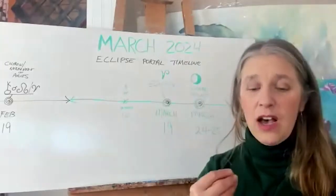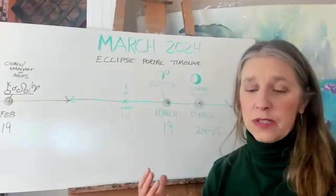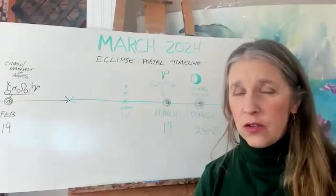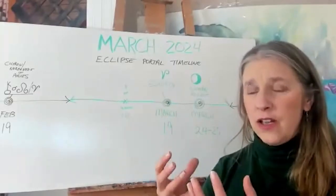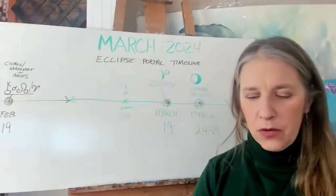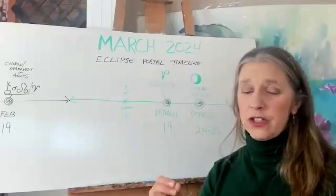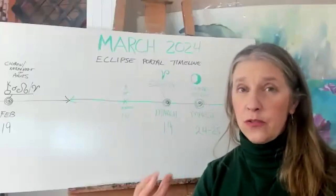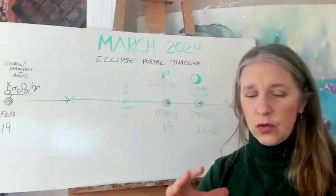When I went and looked at this clairvoyantly and claircognizantly, I was shown that the upcoming eclipses represent a rite of initiation in the whole ascension timeline. This is a very crucial point.